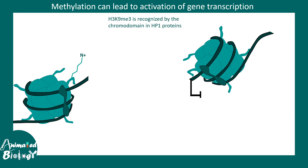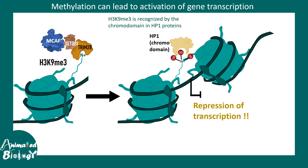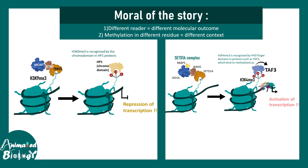Other residues such as H3K9 can also be methylated, and specific complexes lead to trimethylation at this site. This trimethylation has the opposite effect of gene activation — it is recognized by the HP1 protein, which is also a chromodomain-containing protein, but it leads to heterochromatinization. The moral is that different readers lead to different molecular outcomes, and the site of methylation on the histone itself provides a different context, so these two factors decide the outcome of histone methylation.